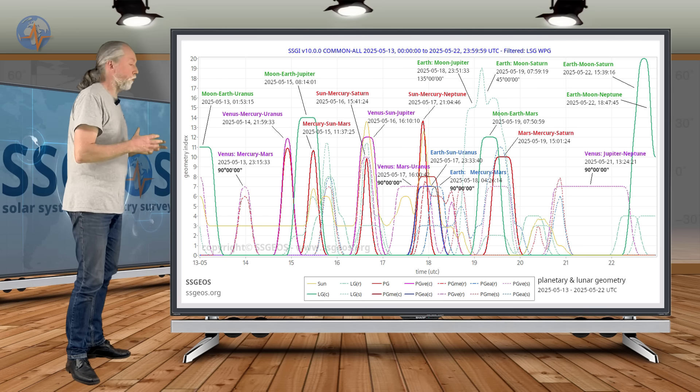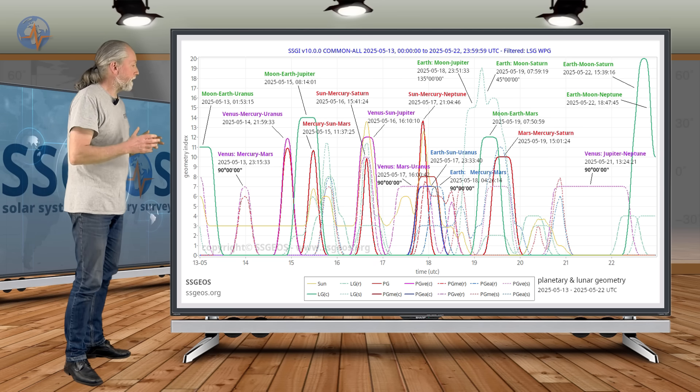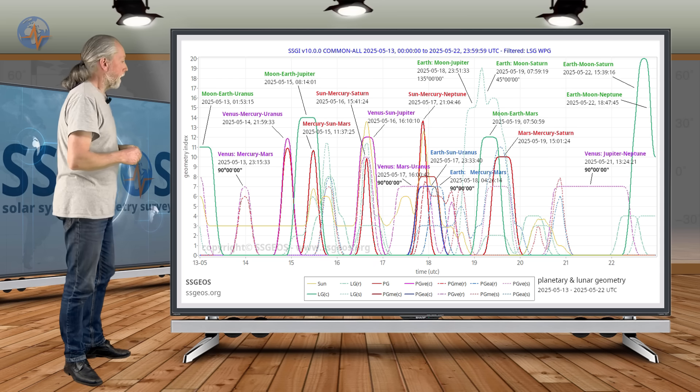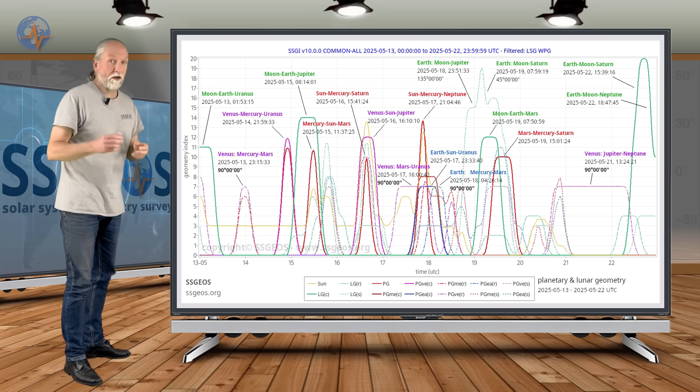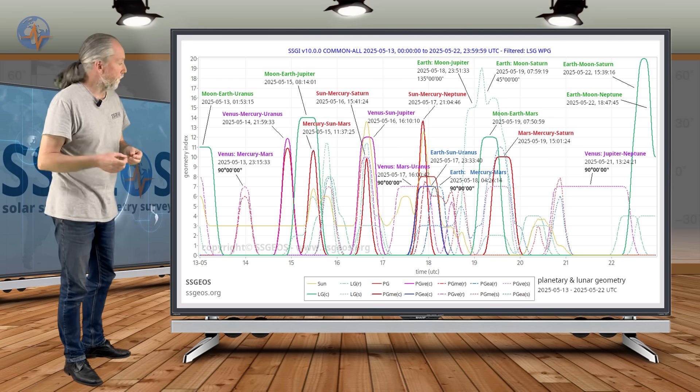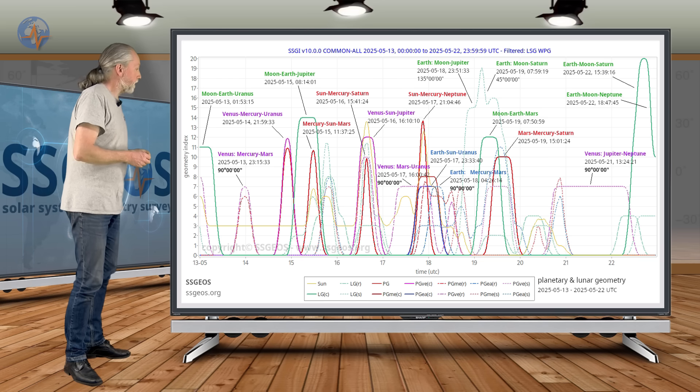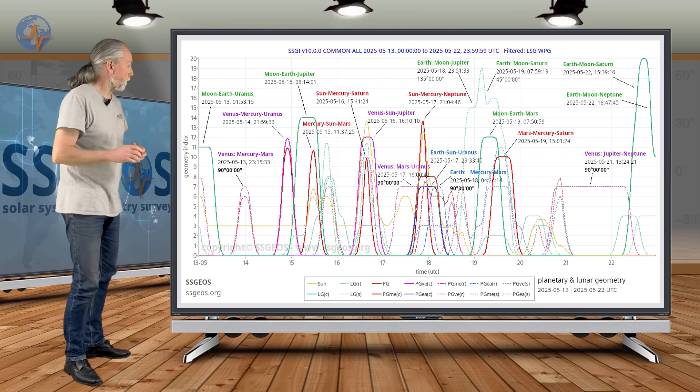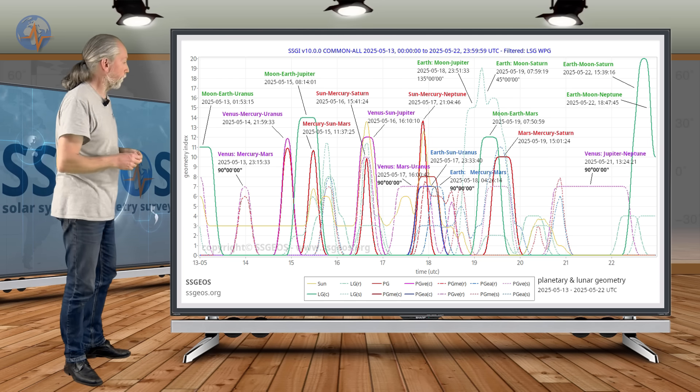On the 18th, we see some right-angle geometry really clustering there that could be equally critical as on the 15th. Right-angle geometry with Earth, Mercury and Mars. That could result in strong magnitude six earthquakes. That follows on the right angle with Venus-Mars-Uranus also right-angle. It all happens there on the 17th, 18th. This is a really critical convergence.